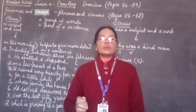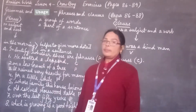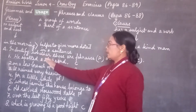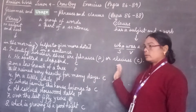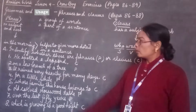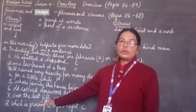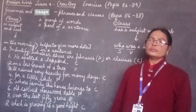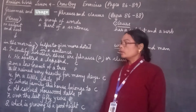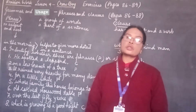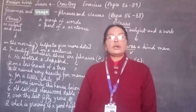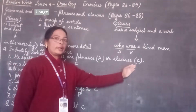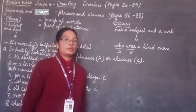Now we will step into our exercises. In exercise number A, some word groups are given for us to identify whether they are phrases or clauses. Whatever the group of words written from number 1 to number 8, we have to indicate whether these groups of words are phrases or clauses. If they are phrases, we will write P. If they are clauses, we will write C against those groups of words.